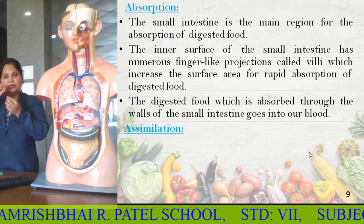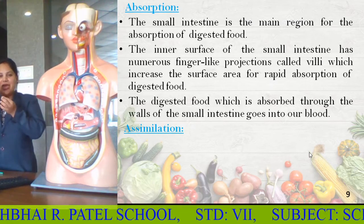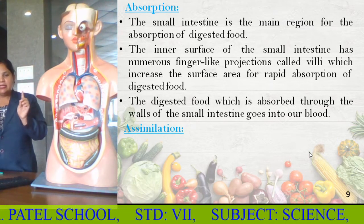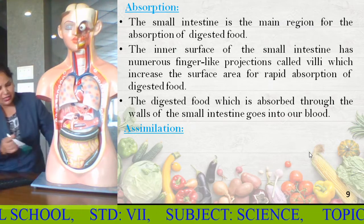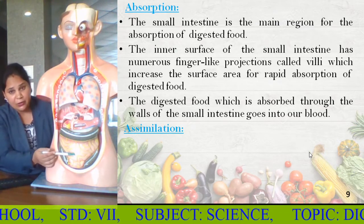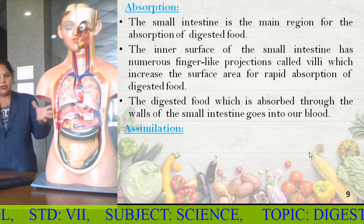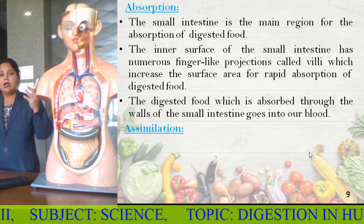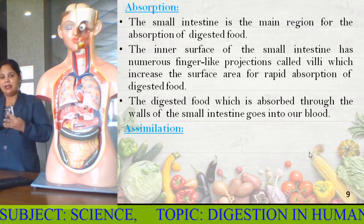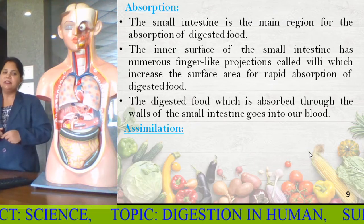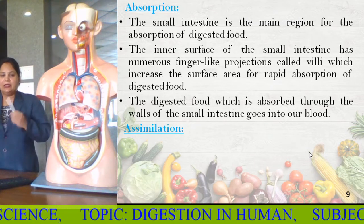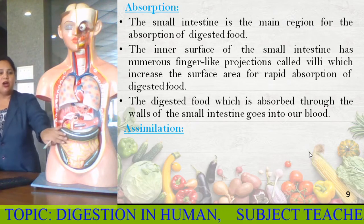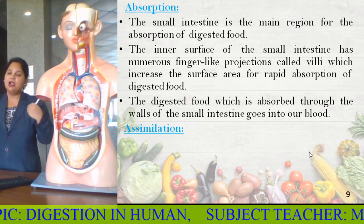You may have noticed thread-like structures outside — in the same way, these villi, which you can see denoted as hair-like structures in the diagram, increase the surface area for the rapid absorption of the digested food. The digested food, with the help of villi, is absorbed through the walls of the small intestine and goes into our blood.